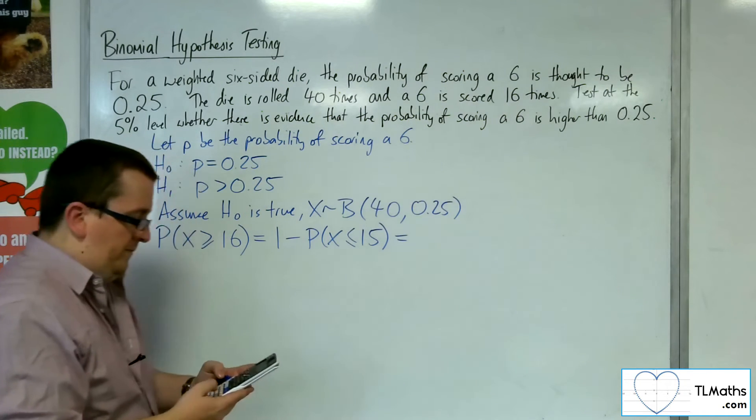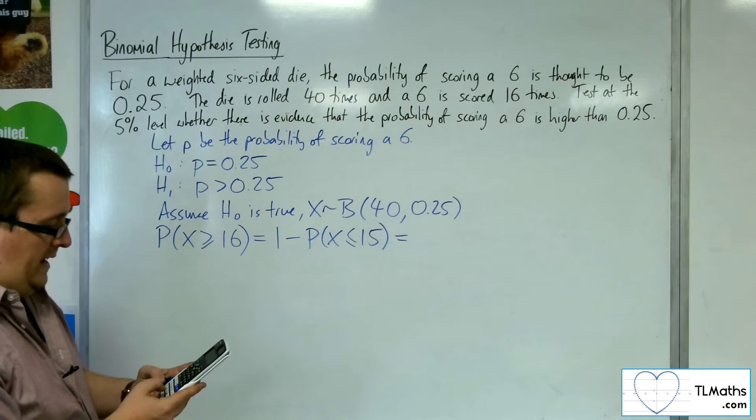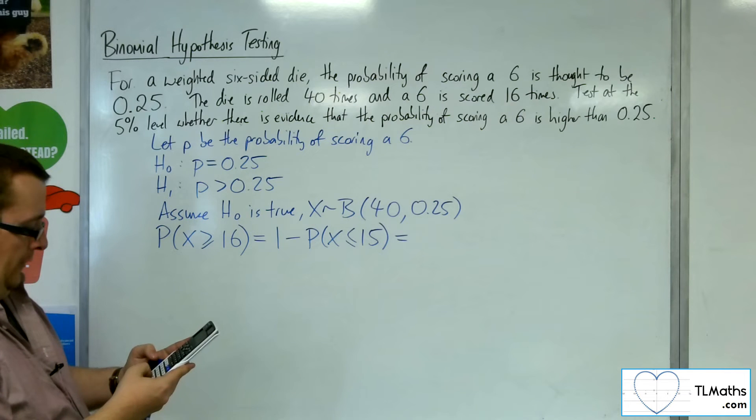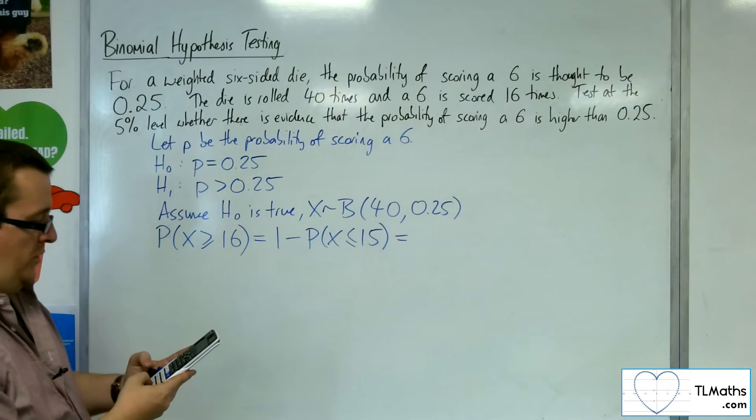Going to menu, number 7, normal CD, and then variable. So X here is 15, n is 40, and the probability is 0.25.